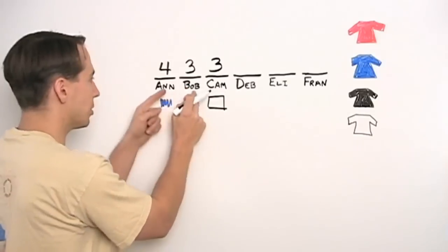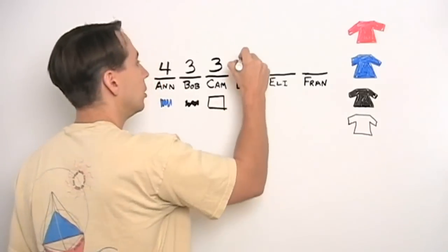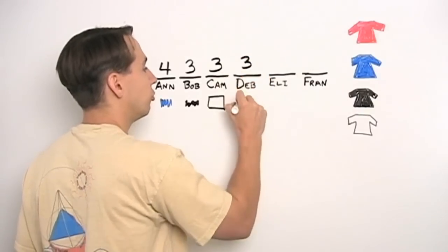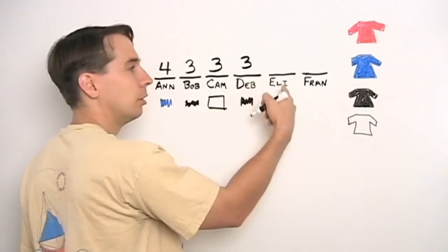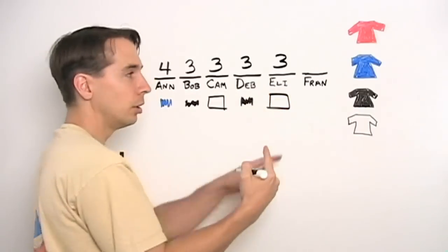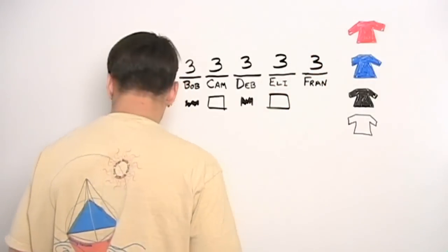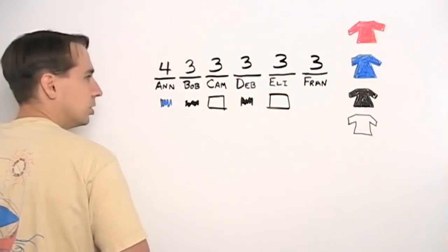Just as Cam only had three choices and Bob only had three choices, Deb has three choices, anything but white. So say she chooses black. Same game with Eli. Eli only has three choices. She chooses white. And then Fran, the only thing Fran can't do is white, so she has three choices as well. And let's say she picks blue.